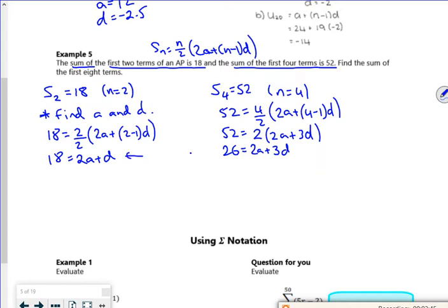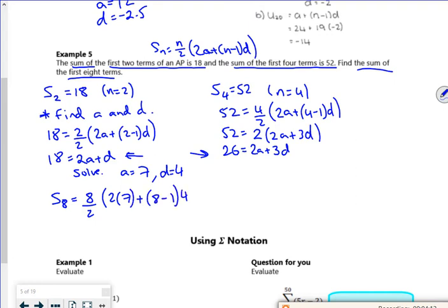If I solve these two simultaneously, it gives me a is 7 and d is 4. Now it wants the sum of the first 8 terms. So the sum of the first 8 terms is 8 over 2, 2 lots of 7 plus 8 minus 1, lots of 4. What's that going to give us? Apparently 168. I don't quite trust my own working out. There you go. That's quite nice, that question. I like that.